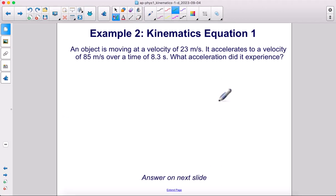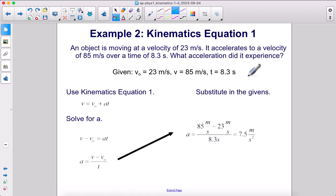An object is moving at a velocity of 23 meters per second. It accelerates to a velocity of 85 meters per second over a time of 8.3 seconds. What acceleration did it experience? First, we write out our givens. Initial velocity is 23, final velocity is 85, and the time span is 8.3 seconds.